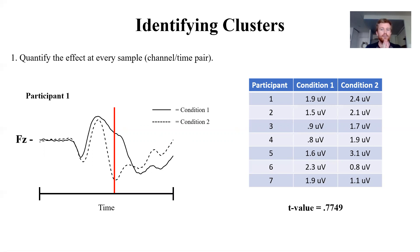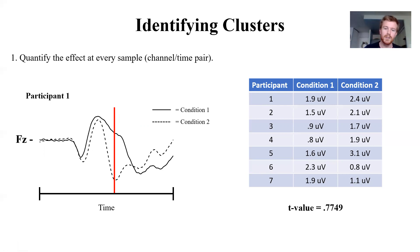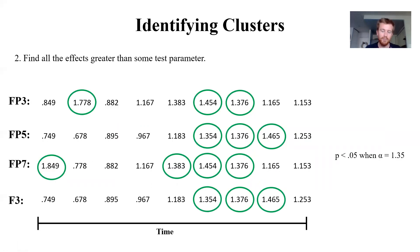To identify clusters, we look at every point in time and every point in space and quantify the effect between our two conditions. At each time point and channel, we take the values of condition one and condition two for all participants and use a t-test. This gives us a t-value — a quantification of the strength of the effect — at every channel-time pair. So for every point in time and every single channel, we quantify how large the difference was between our two conditions.